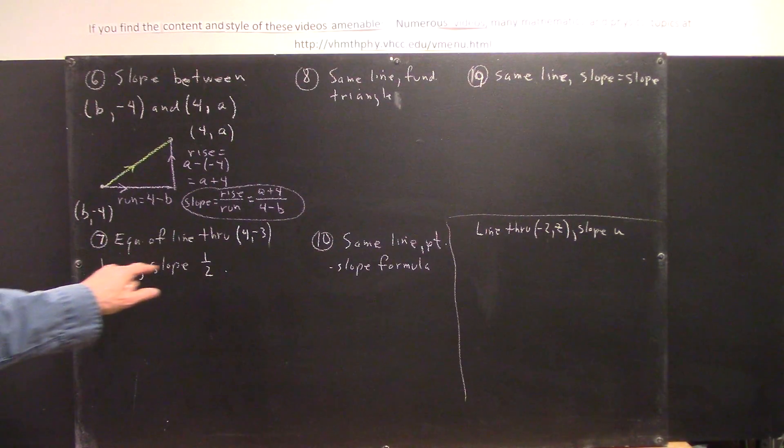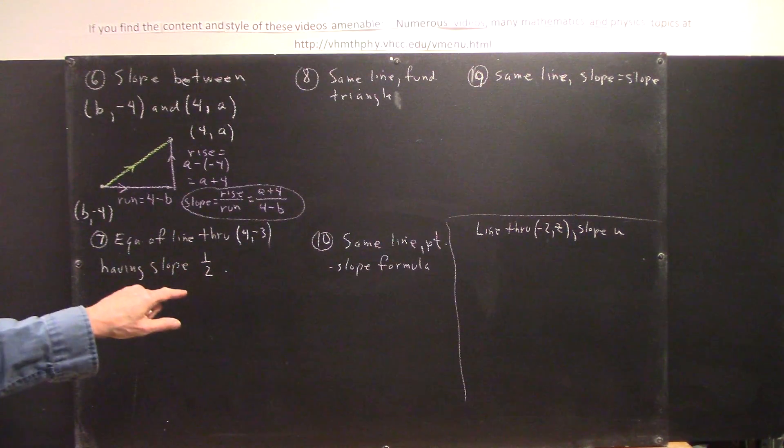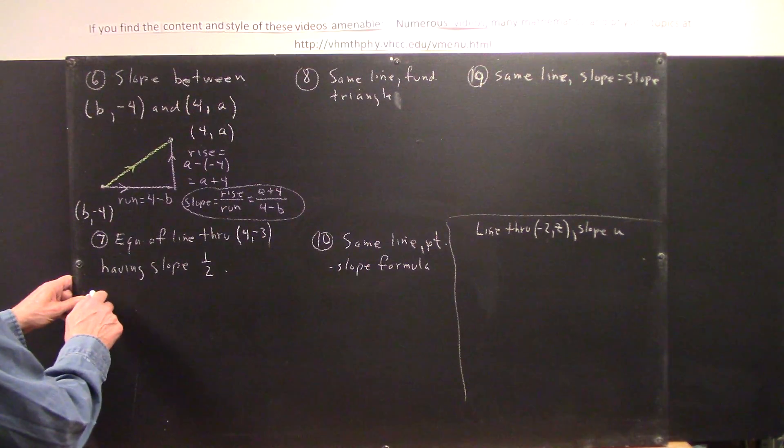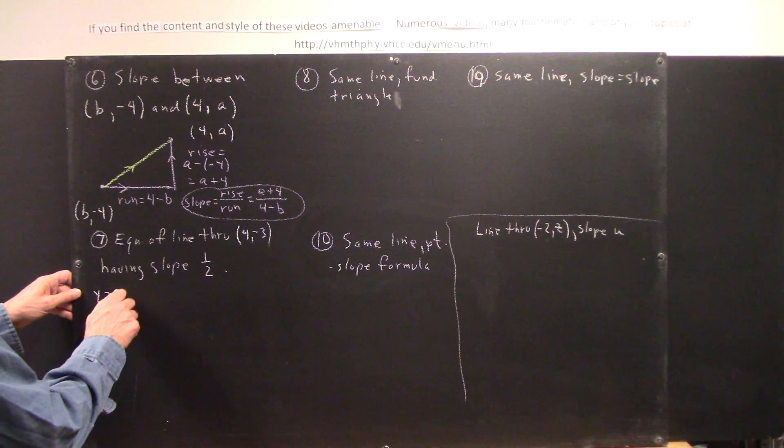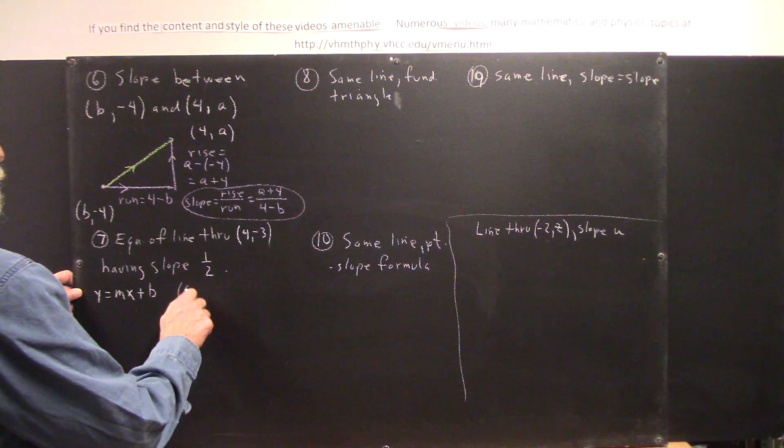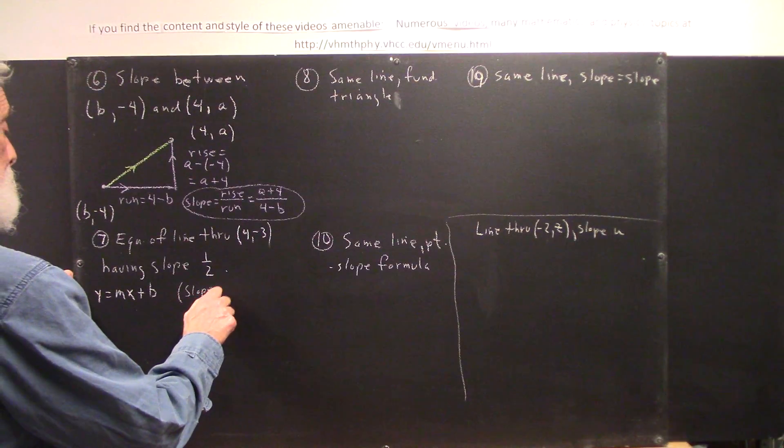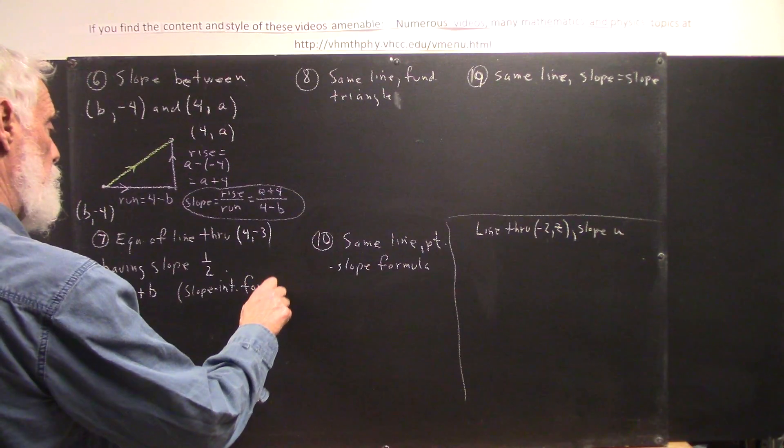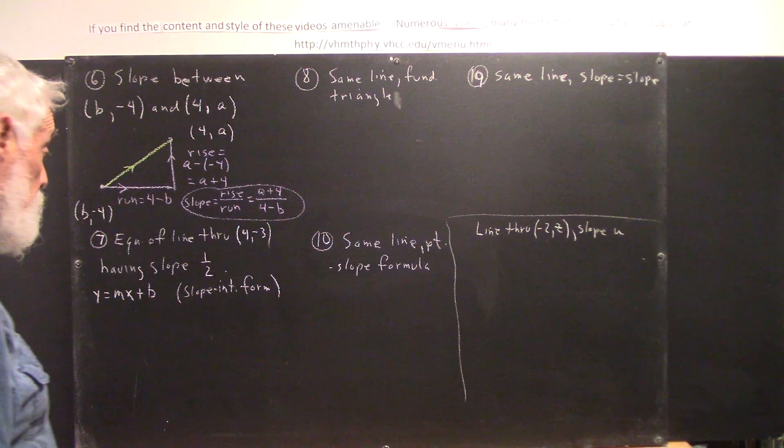Next one. We're asked to find the equation of the line through 4, negative 3, having slope 1 half. Now, there are four different methods that we can use for finding the equation of a line of given slope through a point. One is y equals mx plus b. That's called the slope intercept form.